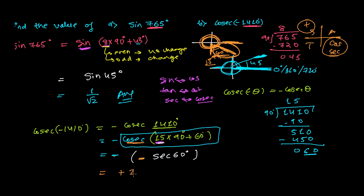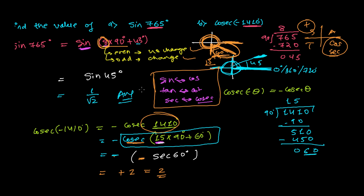To summarize: write your given angle in the form of a multiple of 90, then check whether that multiple is even or odd. If even, make no change to the trig ratio. If odd, change according to the rule — sine to cosine, cosecant to secant, and so on. Then check which quadrant the angle falls in and apply the correct sign using the CAST rule. That is all. If you have any questions about this explanation, please feel free to comment below this video and I will get back to you. See you in the next video. Goodbye.